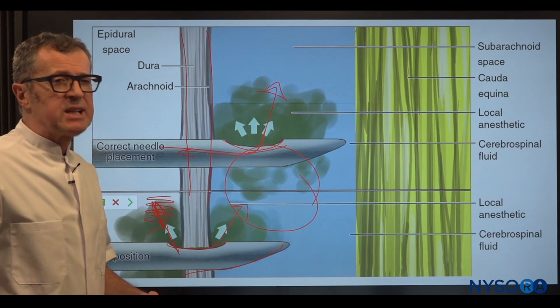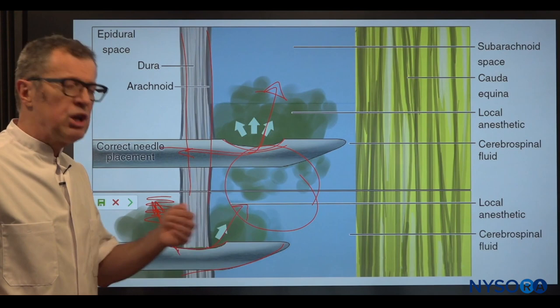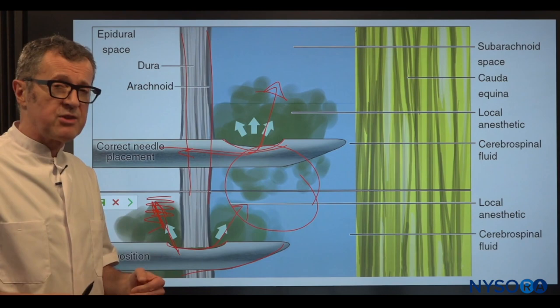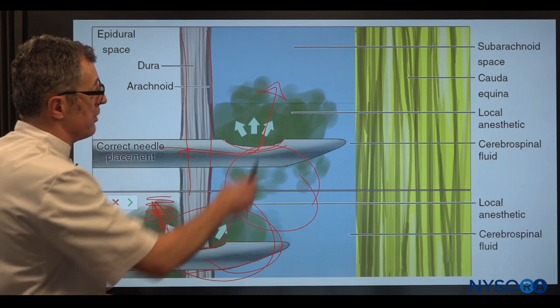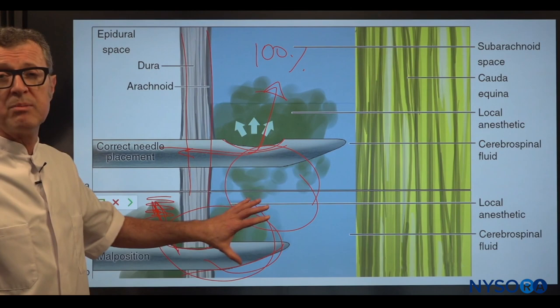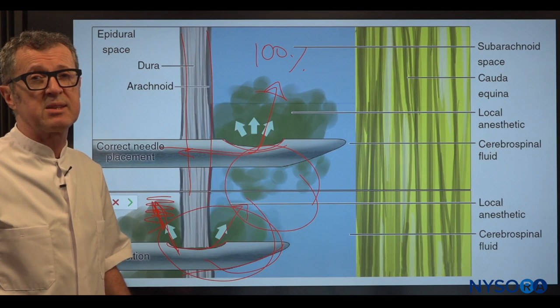Any failure to get a really clear and consistent flow of CSF during gentle aspiration could indicate that your injection will not be 100% inside the intrathecal space. This is one of the most common failures for spinal anesthetic, when you actually do have CSF in your needle after inserting the needle into the patient's back.